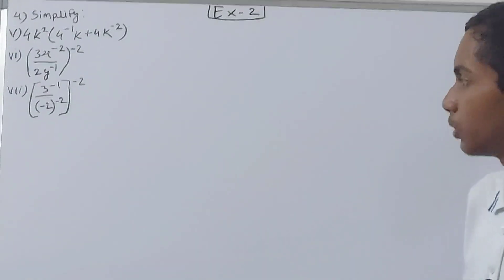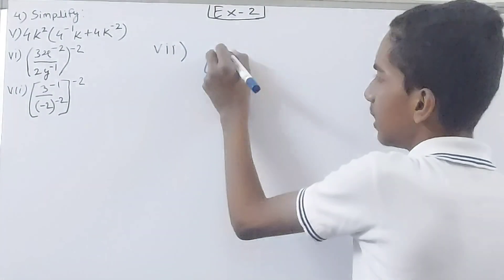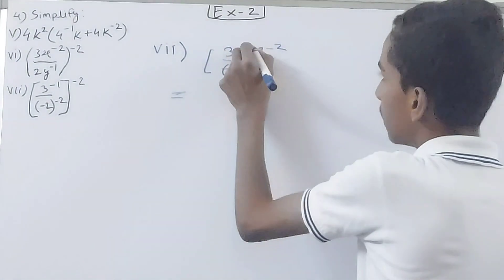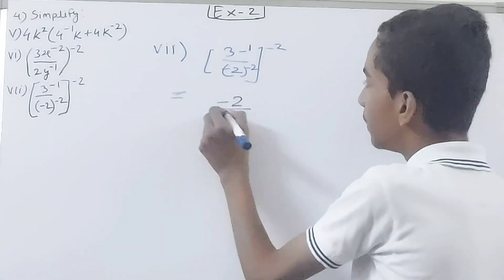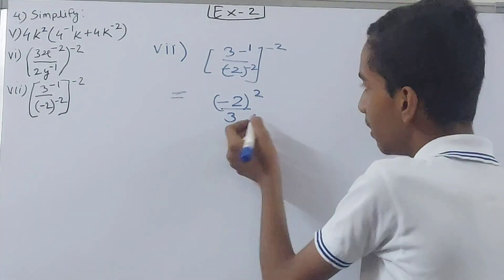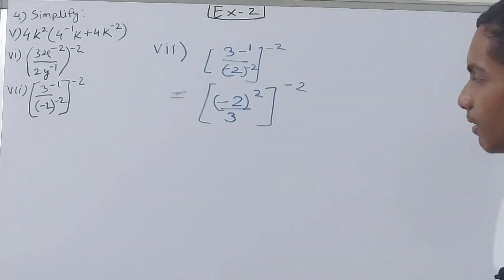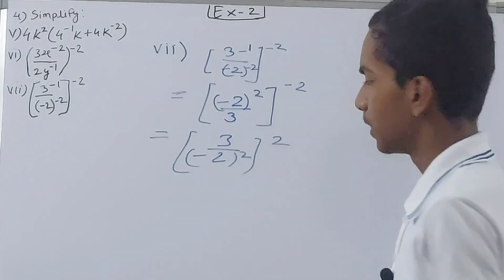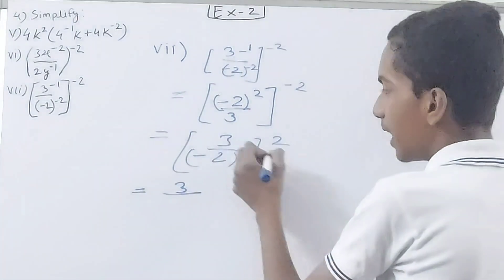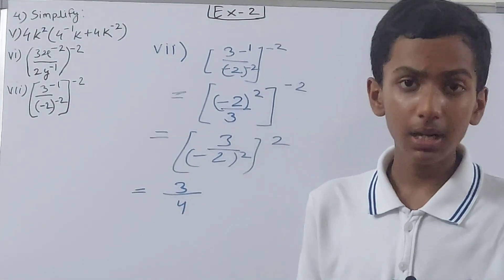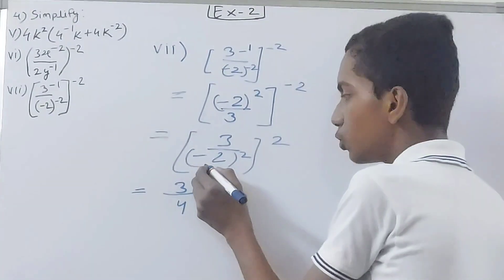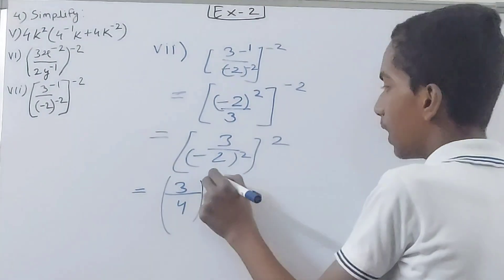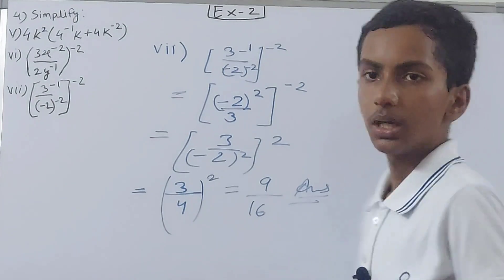The seventh part is 3 to the power minus 1 upon minus 2 to the power minus 2, whole to the power minus 2. Both parts are negative so we exchange them: minus 2 goes up with power 2, and 3 stays below with power 1. Then reciprocating for the outer minus 2 gives 3 by minus 2, whole squared. Solving inside: minus 2 squared is plus 4 — the square of a negative is always positive. So we get 3 by 4, whole squared = 9 by 16. That is our answer.